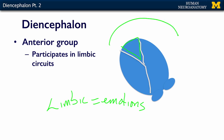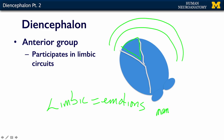which goes right over the top of your corpus callosum. It also connects to lower centers, which are the hypothalamus — your hypothalamus being inferior and anterior to your dorsal thalamus — and it connects to a specific nucleus called the mammillary nucleus.